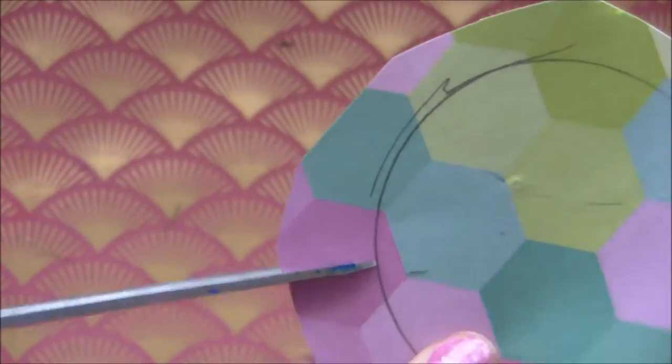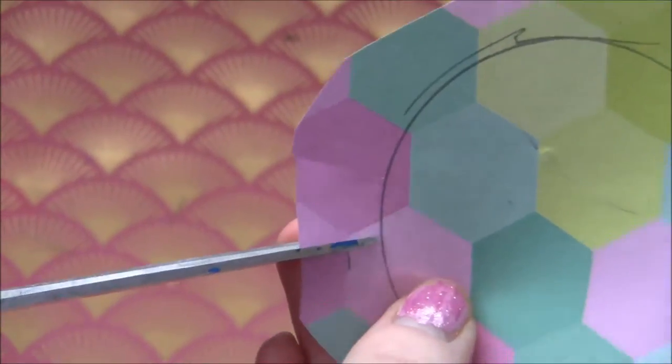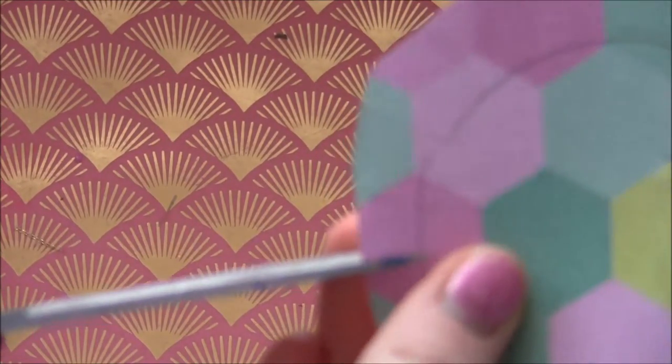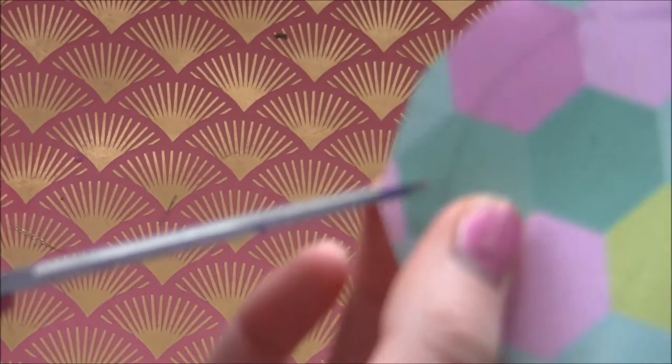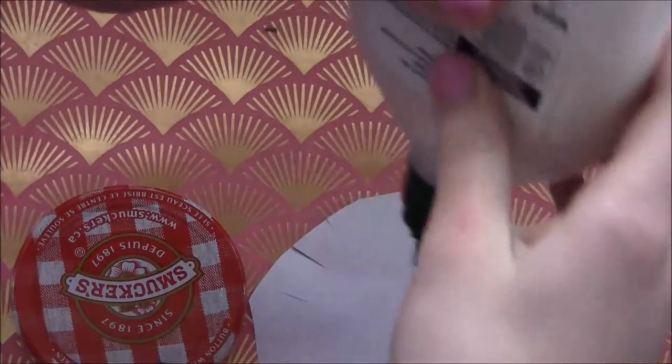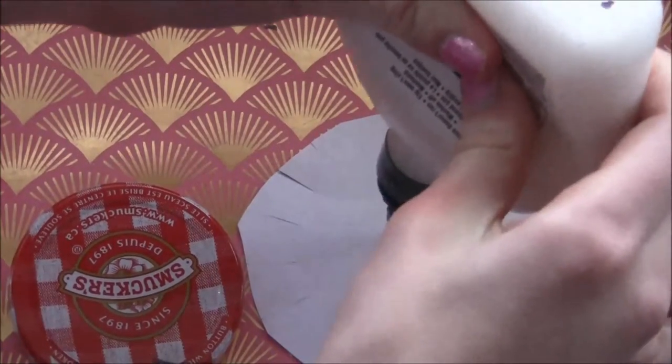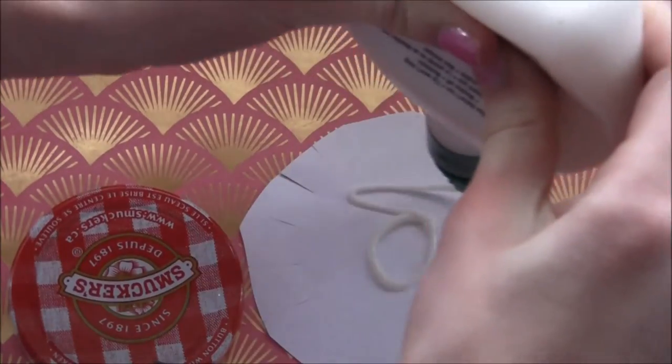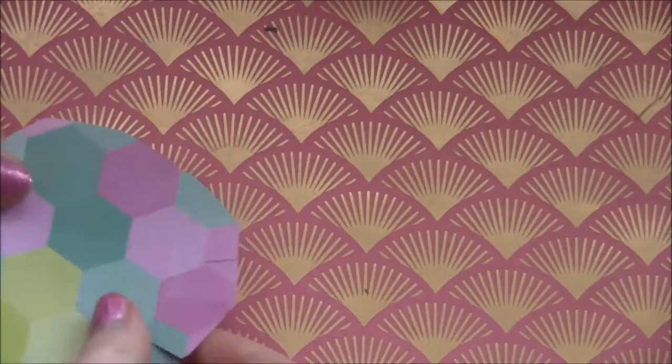Next, cut little slits around the piece of paper like I'm doing here. And next, you're just going to want to glue your piece of scrap of paper onto your jar lid. And you can use any type of glue. I'm just using some white glue.